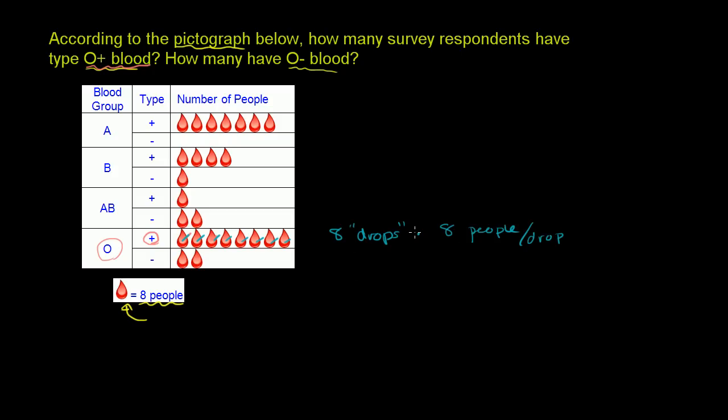And so eight times eight, and actually even the drops, you can view them as canceling out if you view them as units. So drops, drops. Eight times eight is equal to 64 people. So they could have written literally the number 64 right over here. 64 people have type O positive blood. Now let's think about the O negative case.